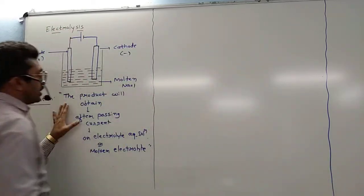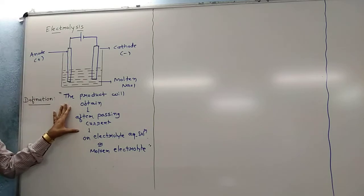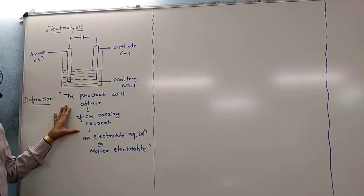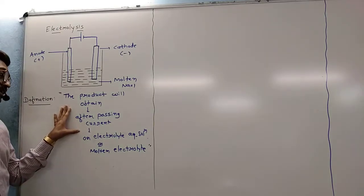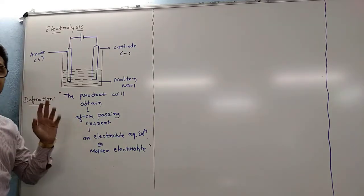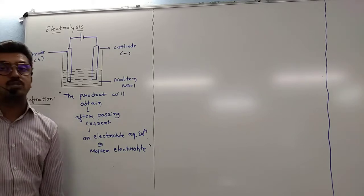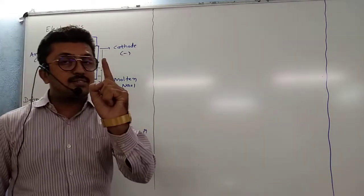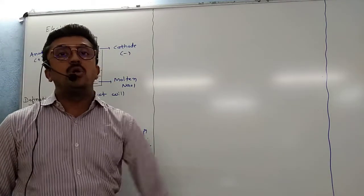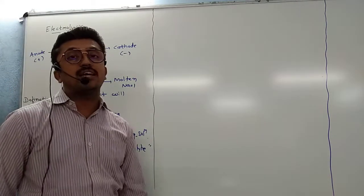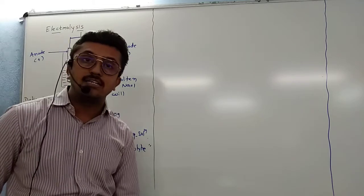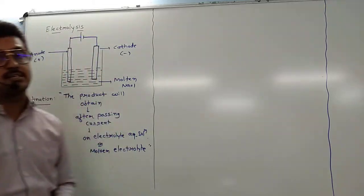So the product will be obtained after passing current on an aqueous solution of electrolyte. A chemical process will take place and the product will be obtained. This is known as the electrolysis process.